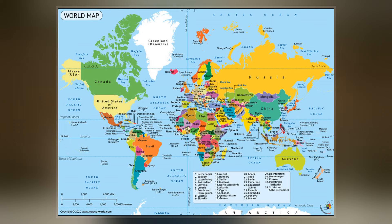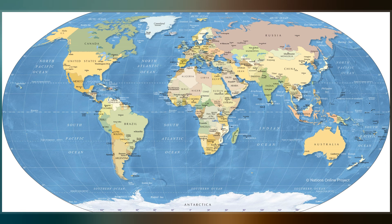Maps rendered in two dimensions by necessity distort the display of the three-dimensional surface of the Earth. While this is true of any map, these distortions reach extremes in a world map.